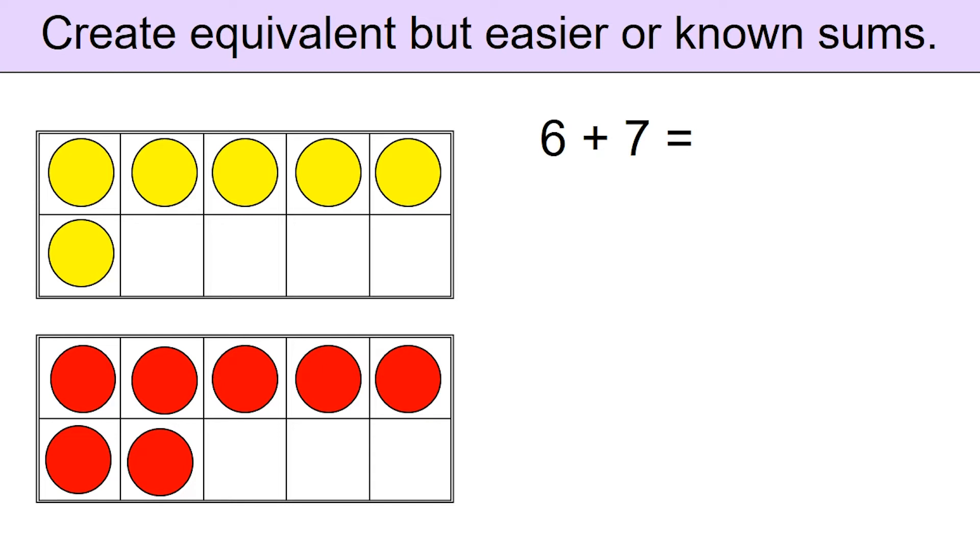Let's take a look at the second ten frame. The 7 in the second ten frame is nothing but 6 plus 1. Let's rewrite the 7 as 6 plus 1.